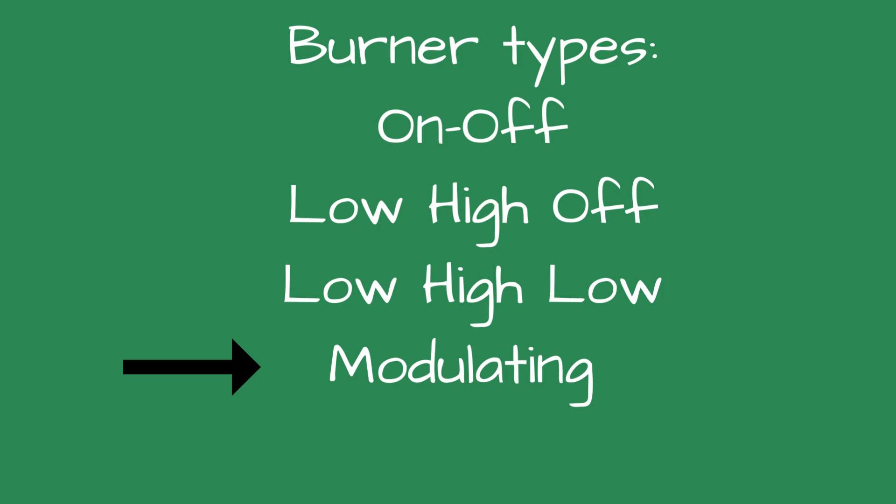Modulating: this burner starts at low fire and will travel between low and high fire until the call for steam ends or the boiler reaches its pressure set point. It can move to any position between low and high fire. Either low-high-low or modulating burners are preferred for brewery boilers. Advantages: less boiler cycling, reduced ignition noise, better efficiency, and more consistent steam pressure. Disadvantage: more expensive than on-off, low-high-off, or low-high-low burners.